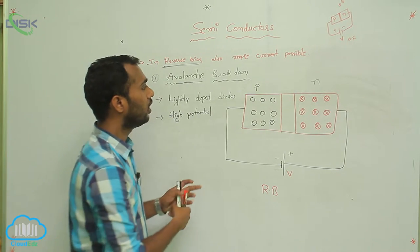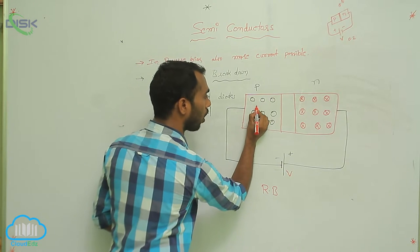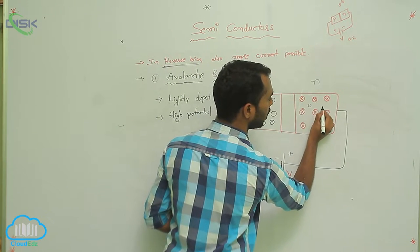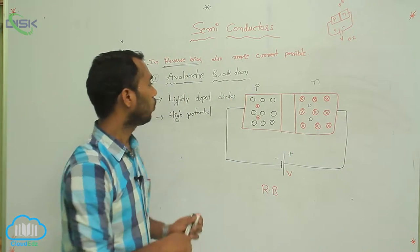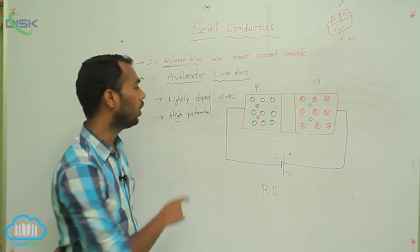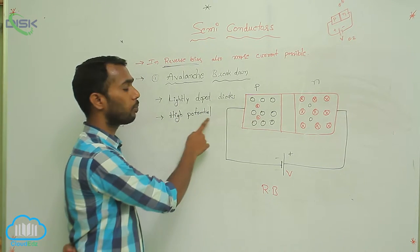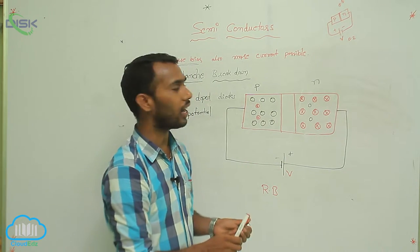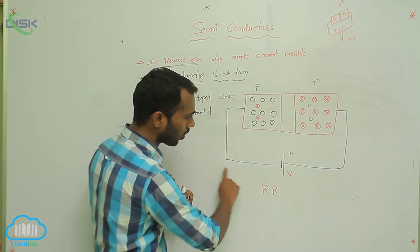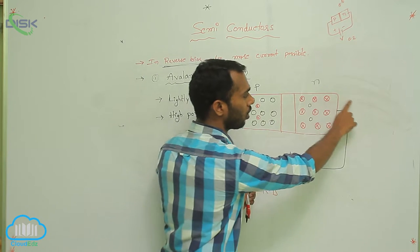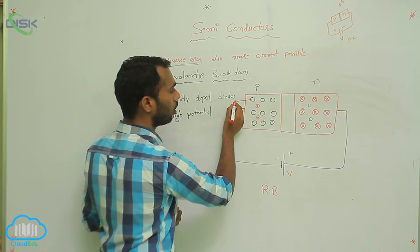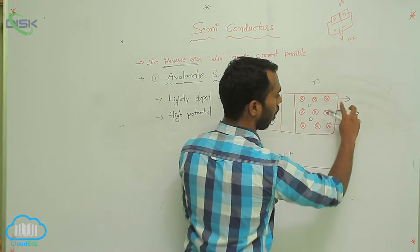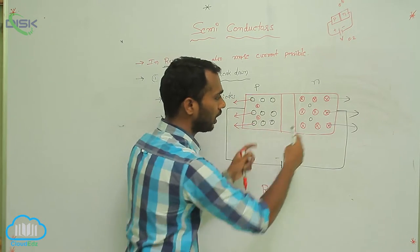In the P-type, majority charge carriers are holes and minority charge carriers are electrons. In the N-type, majority charge carriers are electrons and minority charge carriers are holes. For avalanche breakdown, the diode must be lightly doped and more potential must be applied. If I apply high potential, all the holes move towards the negative terminal and all the electrons move towards the positive terminal.